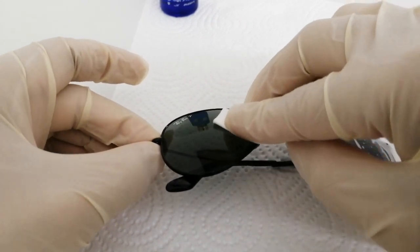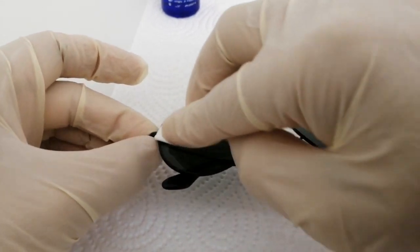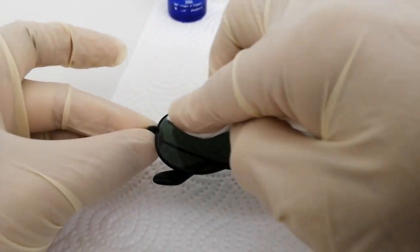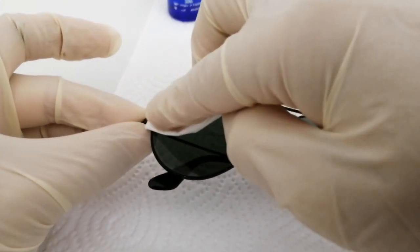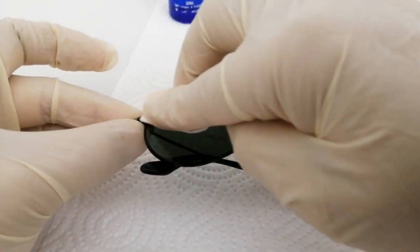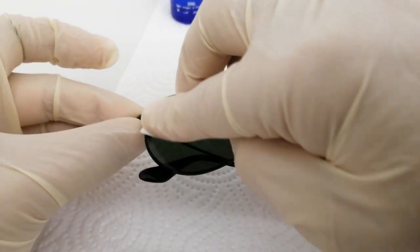You can see the change of color on the surface. Basically, what you want to do is just make a nice thin layer. This layer is extremely thin—you won't be able to even see it with the bare eye.